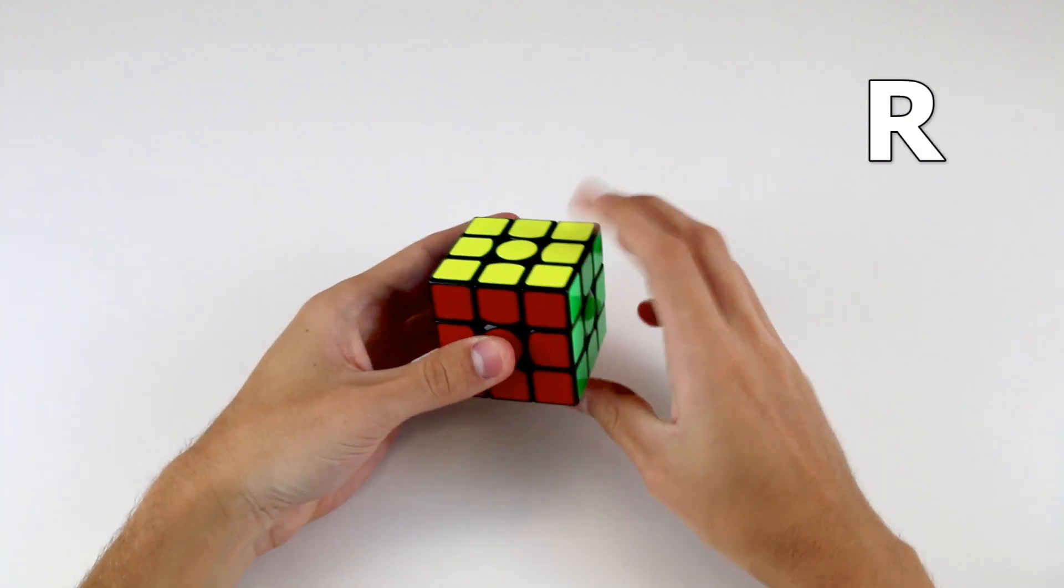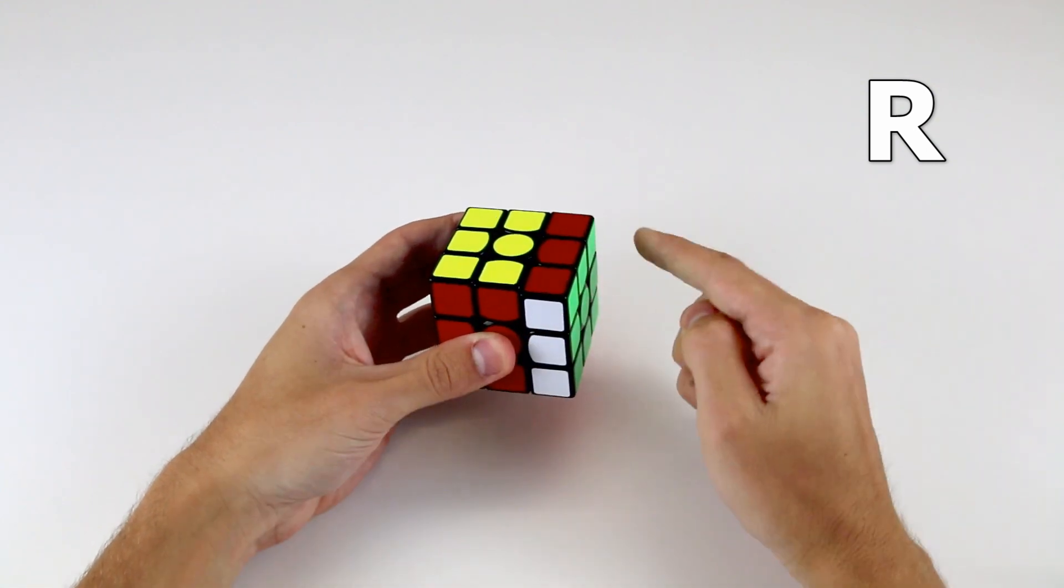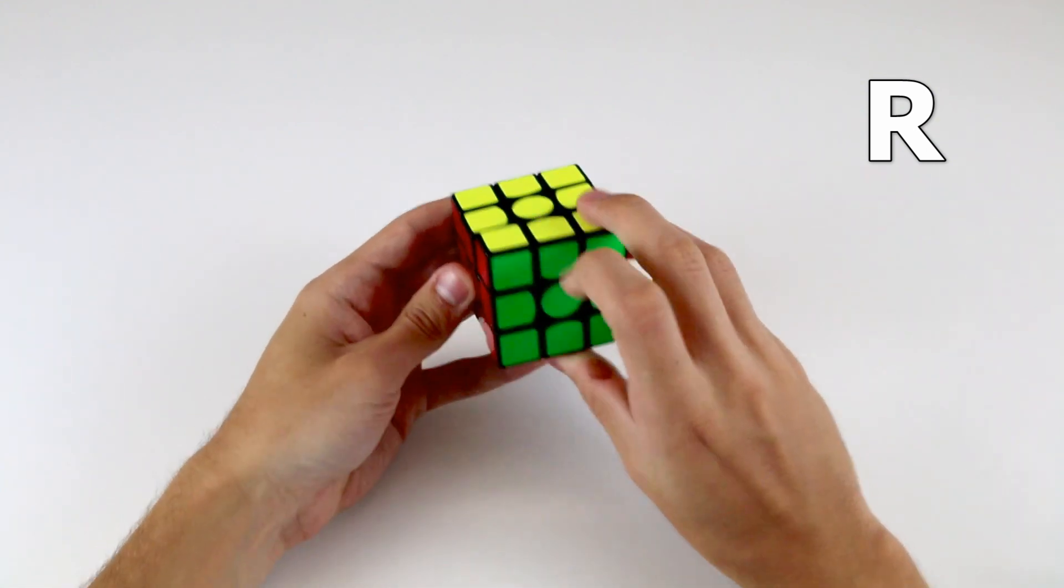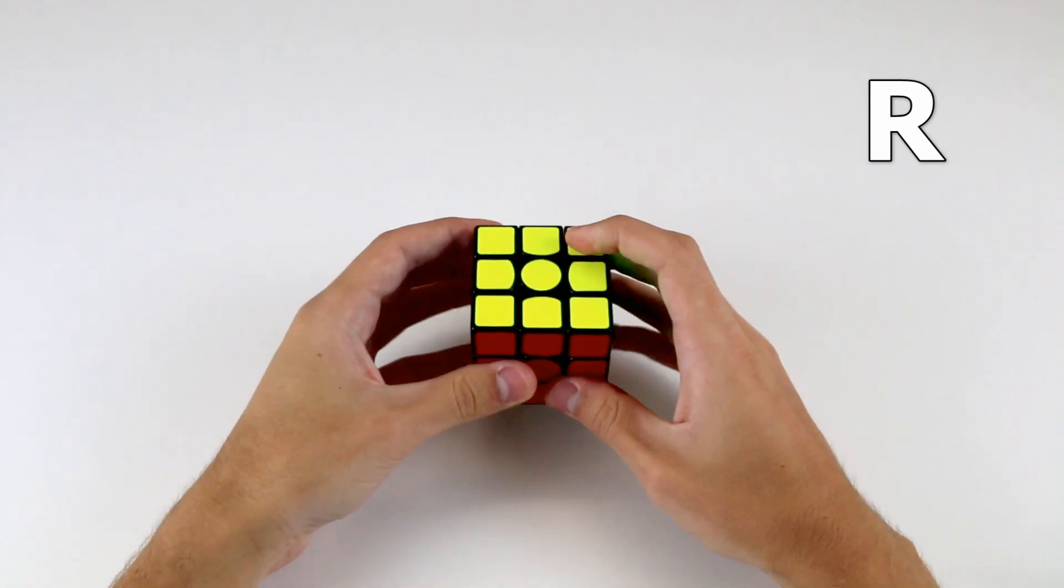but if we do an R, which is the right side 90 degrees clockwise, that actually goes away from you. Because when you look at the right side front on, you're turning it clockwise away from you like that.